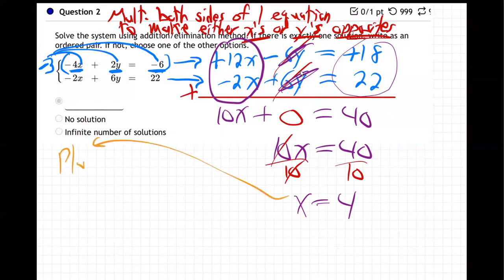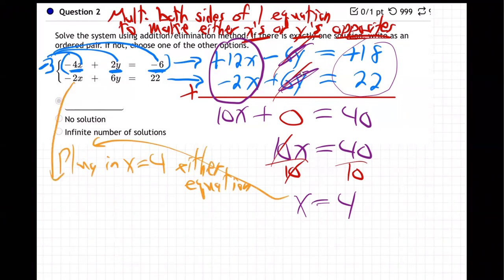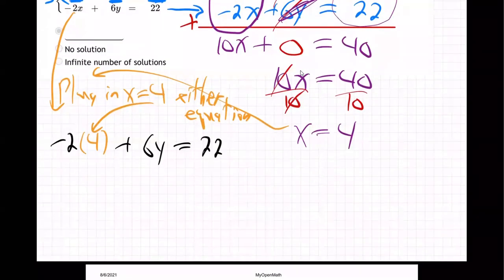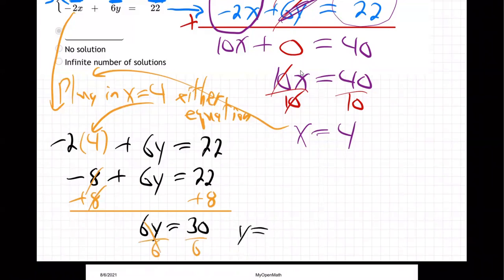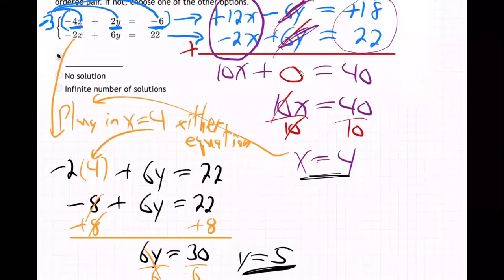Now plug x equals 4 into either equation. Taking the second equation: minus 2x plus 6y equals 22. Substituting: minus 8 plus 6y equals 22. Add 8 to both sides: 6y equals 30. Divide by 6: y equals 5.